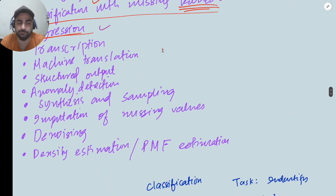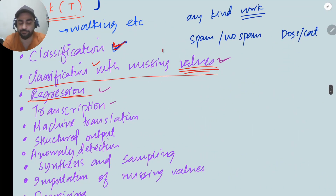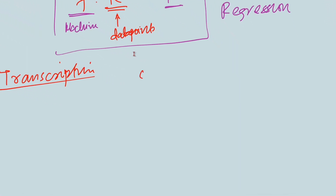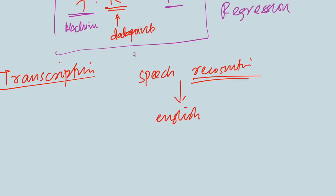The task we have is transcription. In transcription tasks, for example speech recognition — if somebody is speaking English and another person cannot understand English, maybe they speak Chinese, the machine has to recognize my speech. From that speech, we may have to create English subtitles. This is transcription: from audio you generate text-based subtitles. Or from a video, we have to create a script out of it.